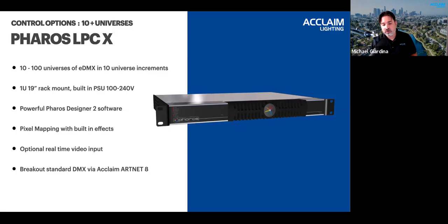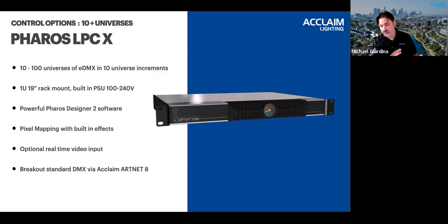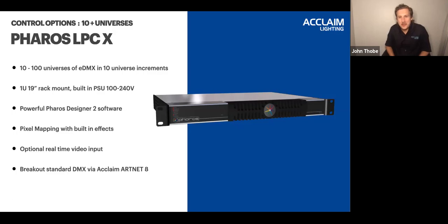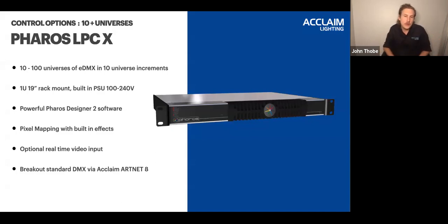When controlling large channel groups that may need different content for different sections, LPC X is your best option. For example, if you have a building facade where the front needs to run one set of content and the back needs a separate set, LPC X is perfect because you can break it into different zones. If you have 500 unique RGBW fixtures, that's 2,000 DMX channels — you could be looking at five, six, seven, or even 30 universes, and that's where this tool is required.